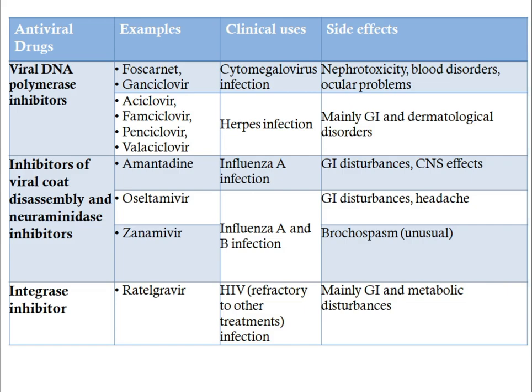The next class is inhibitors of viral cortical coat disassembly and neuraminidase inhibitors, where amantadine, oseltamivir, and zanamivir are included. They are mainly used in influenza A and influenza B infections. GI disturbance and CNS side effects are present, and sometimes bronchospasm is also seen.